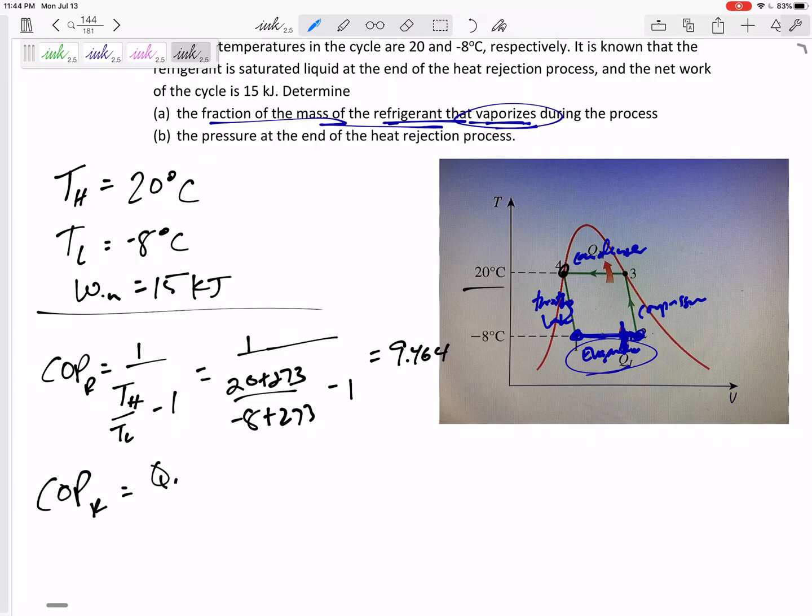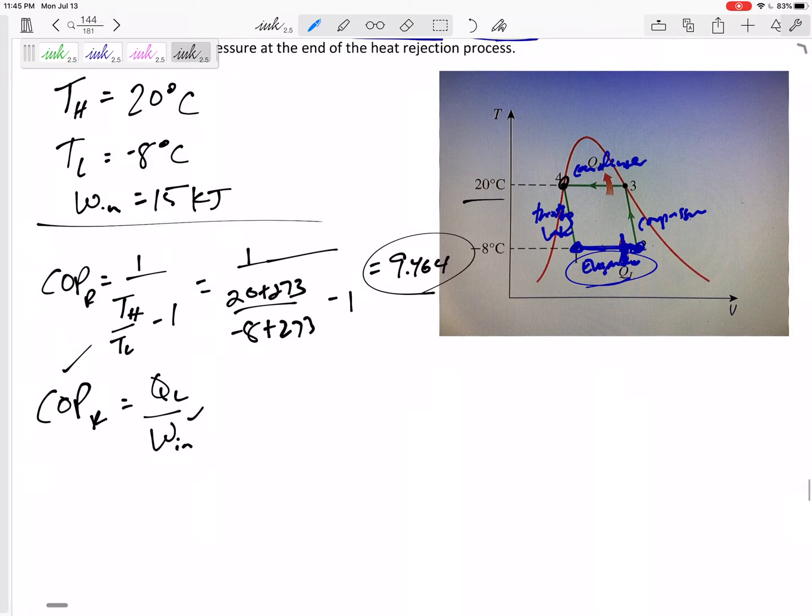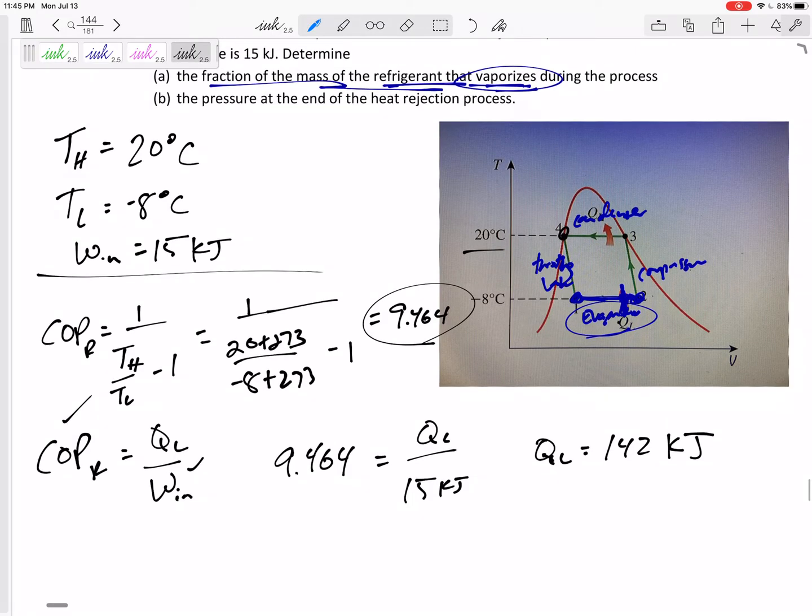I have another equation for coefficient of performance for a refrigerator: COP equals QL over W net. Now that I know COP and W net, I can get the QL. If you have two equations for the same thing, use the first one to find it and use it in the second one. 9.464 equals QL over 15 kilojoules, so QL equals 142 kilojoules.